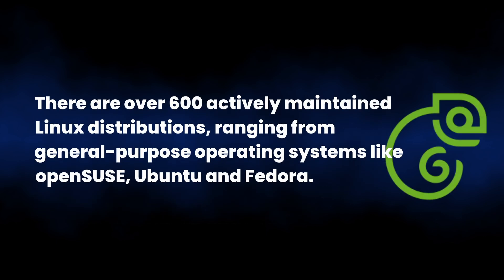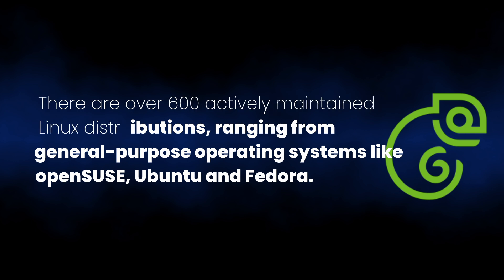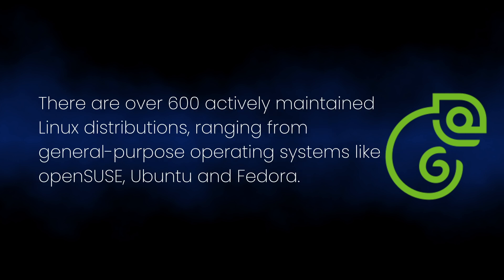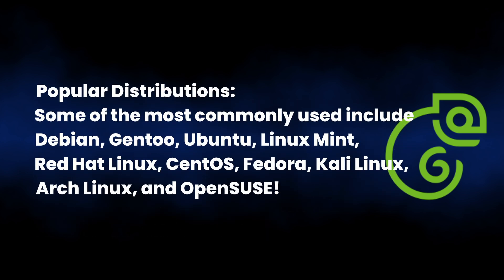If you try OpenSUSE, you can do the Leap version. Leap is a long-term stable release. Tumbleweed is a rolling release — it's always towards the leading edge, not the bleeding edge. If you have a data cap on your internet, I would stay with Leap. The packages and updates tend to be more mature. Updates on Tumbleweed can be a full gigabyte, which is a constant thing.